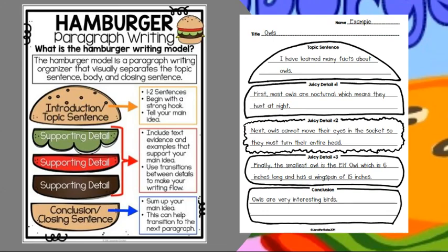As you can see, this is a model of a burger. The hamburger model is a paragraph writing organizer that visually separates the topic sentence, body, and closing sentence. So the top one is the topic sentence, which is the main idea. The supporting details are the lettuce, tomatoes, and the meat. They back up the topic sentence. And the concluding statement, also referred to as the closing sentence, is the bottom one. It restates the topic sentence.